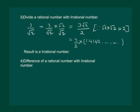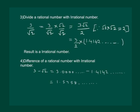Let us check what happens if we find the difference of a rational number and an irrational number. Let us take 3 minus root 2. This can be written as 3.000 minus 1.4142... which is non-terminating. The result will be an irrational number.